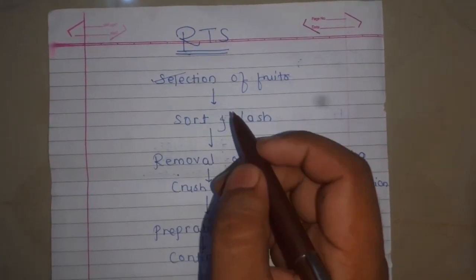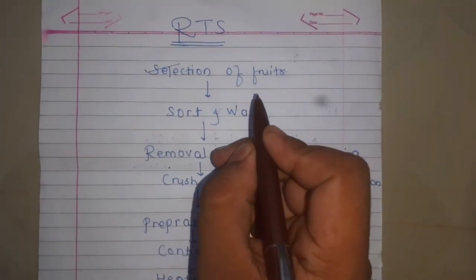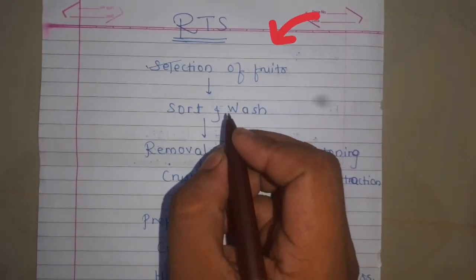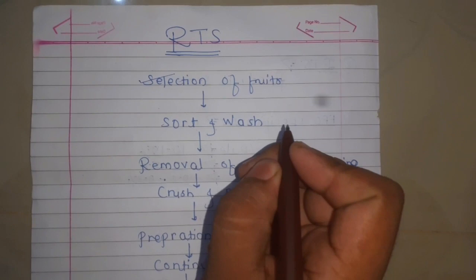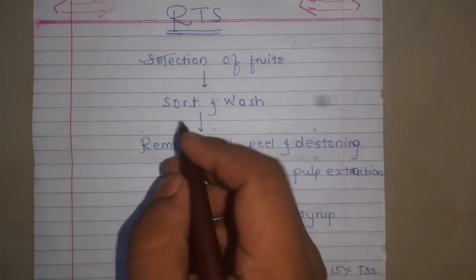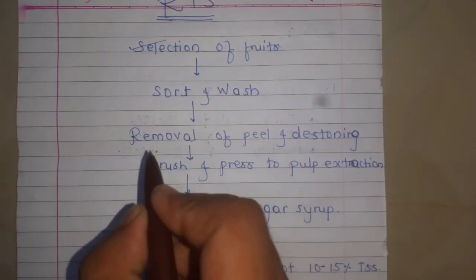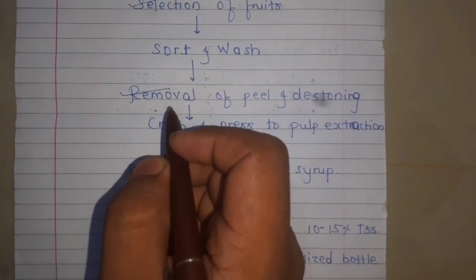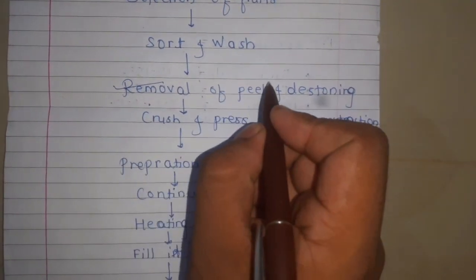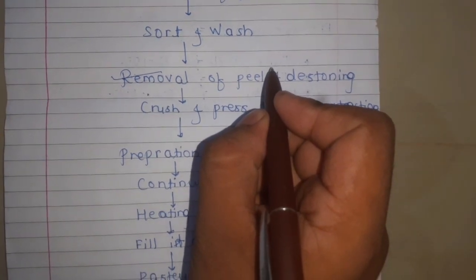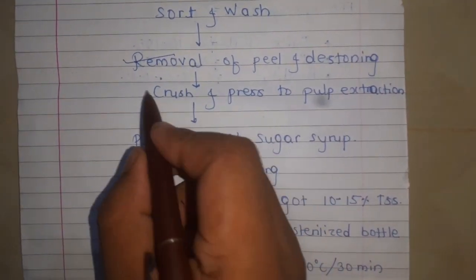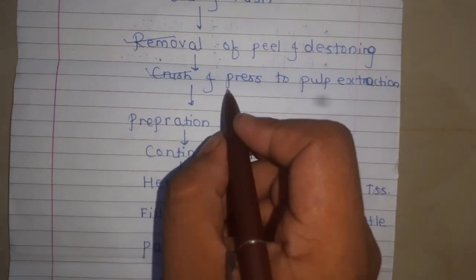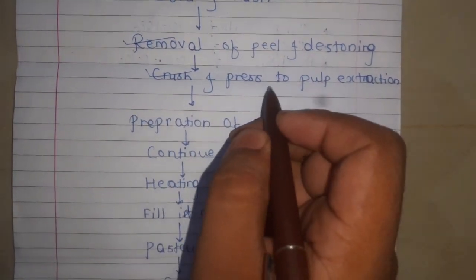The procedure of making RTS: first, selection of fruits — good quality ripe fruits should be taken. These can be washed using cold water to reduce the microbial load on the surface of fruits. After that, remove the peel by cutting the fruit into two pieces with a stainless steel knife to remove the peel and stones. After that, extract the pulp.